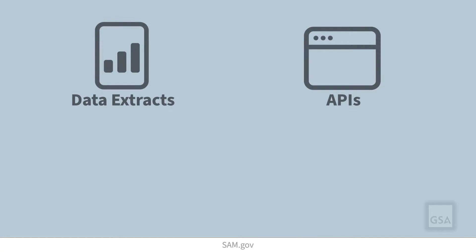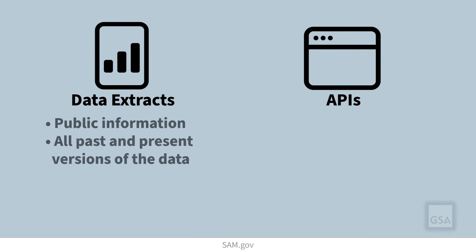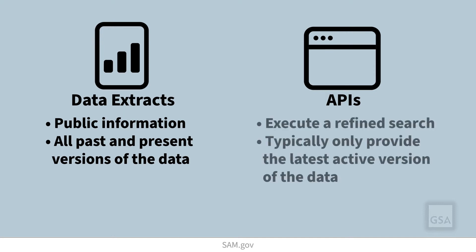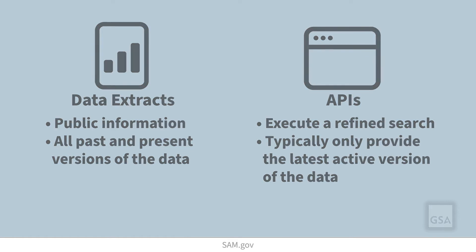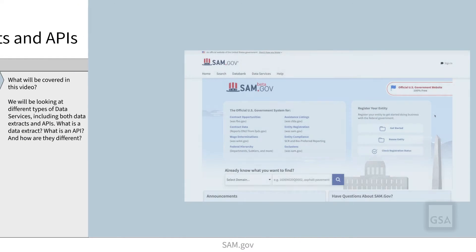What is the difference between a data extract and an API? Data extracts hold public information and include all past and present versions of the data. APIs execute a refined search of the data extract and in most cases only provide the latest active version of the data.